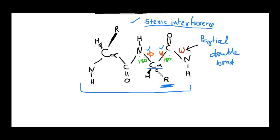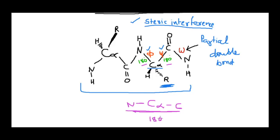The bond angle between the alpha carbon and nitrogen, and alpha carbon and carbon, is 180 degrees. When the polypeptide is fully in extended form, it lies in the same plane. If you take this C-alpha, it has one carbon on one side and one nitrogen on the other side — all in the same plane. So the value of phi and psi in this extended form is also 180 degrees, and the bond rotation values range from minus 180 degrees to plus 180 degrees.